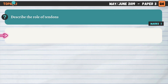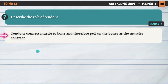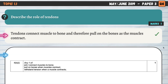Back to topic 1.1 on the skeleton and its functions. Describe the role of tendons. Tendons connect muscle to bone and therefore pull on the bones as the muscles contract. When the muscle contracts and gets shorter, it pulls on the tendon which is connected to the bone, and therefore creates movement. Any one of those points would have gained the mark.